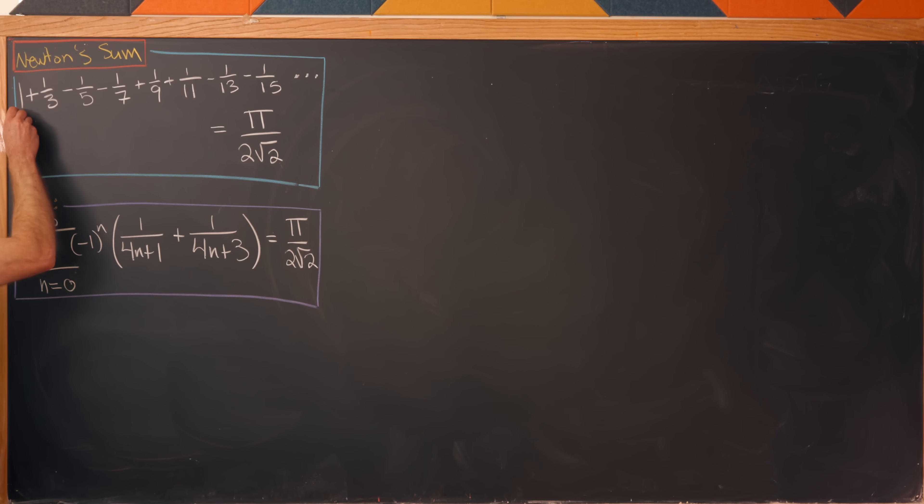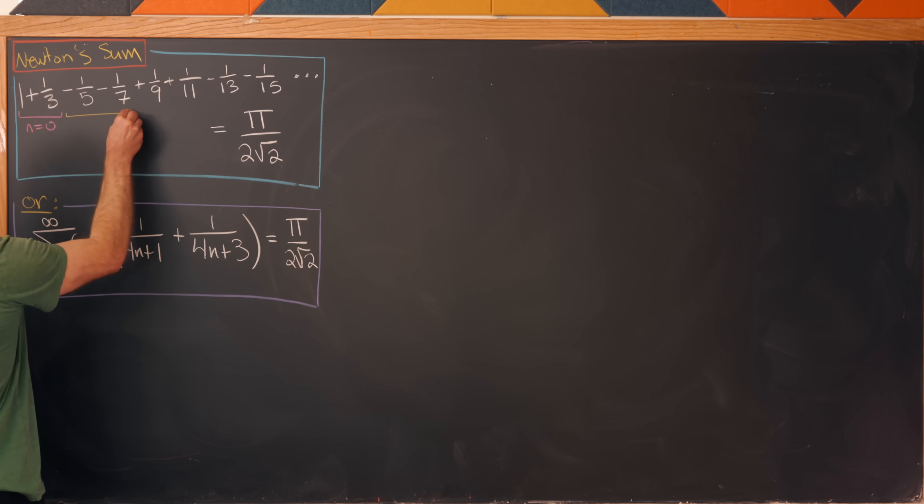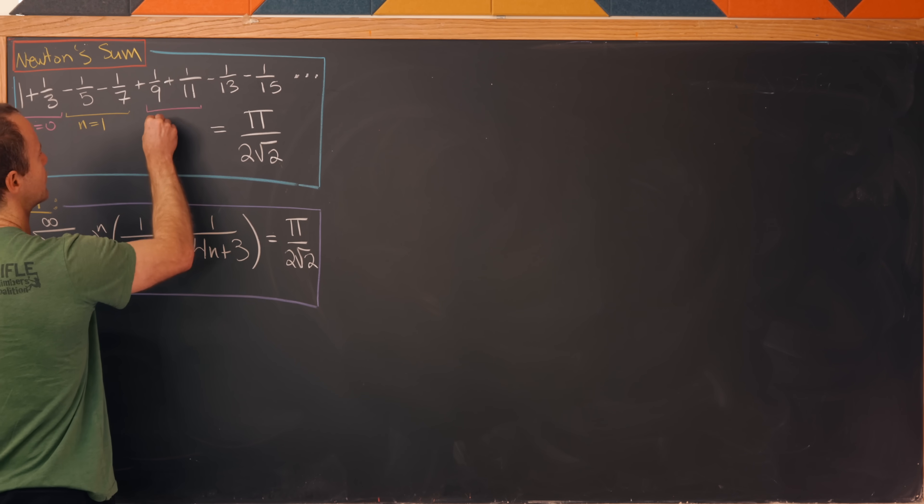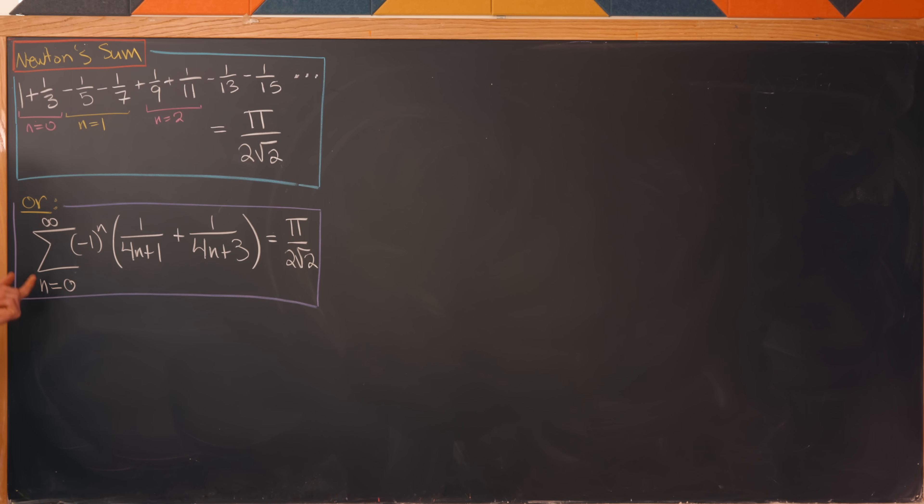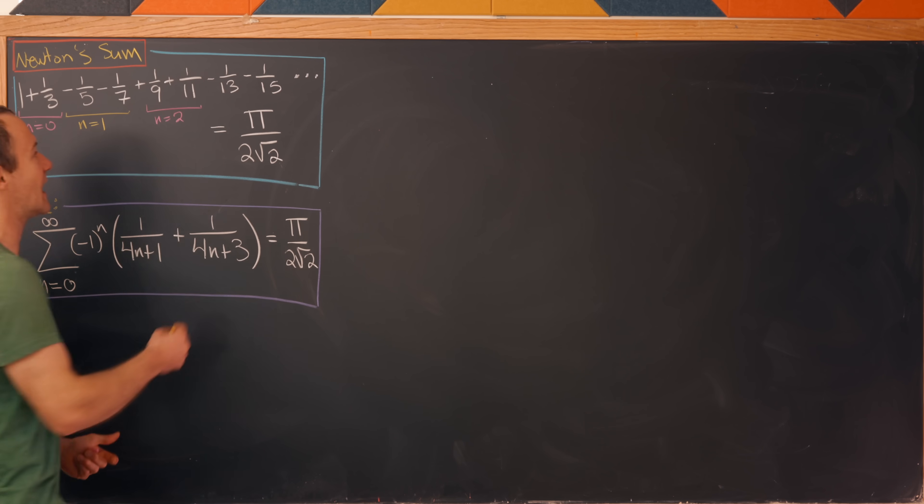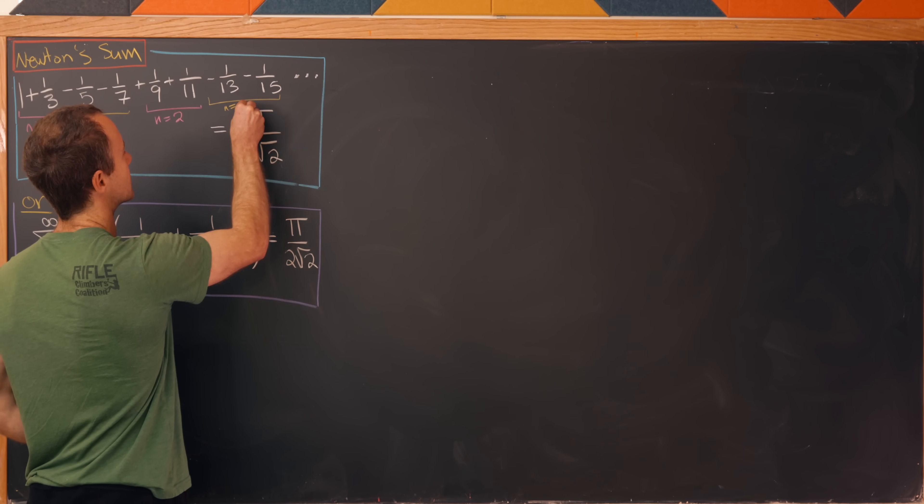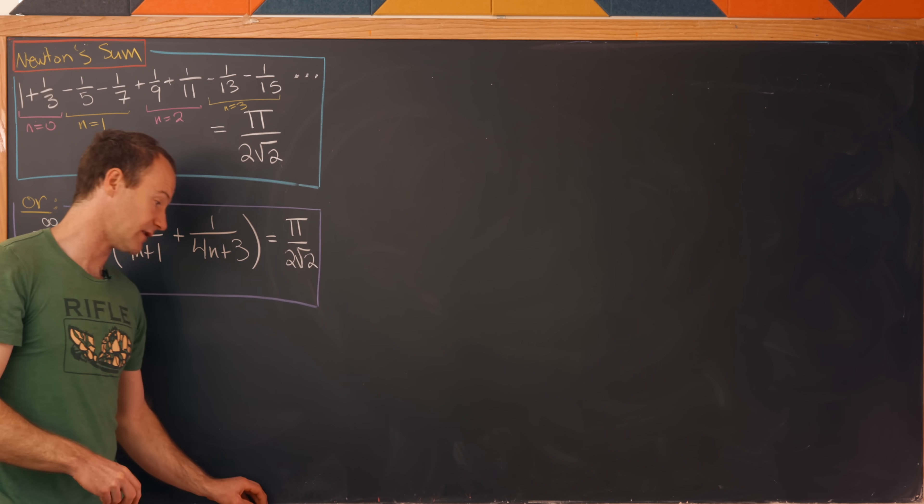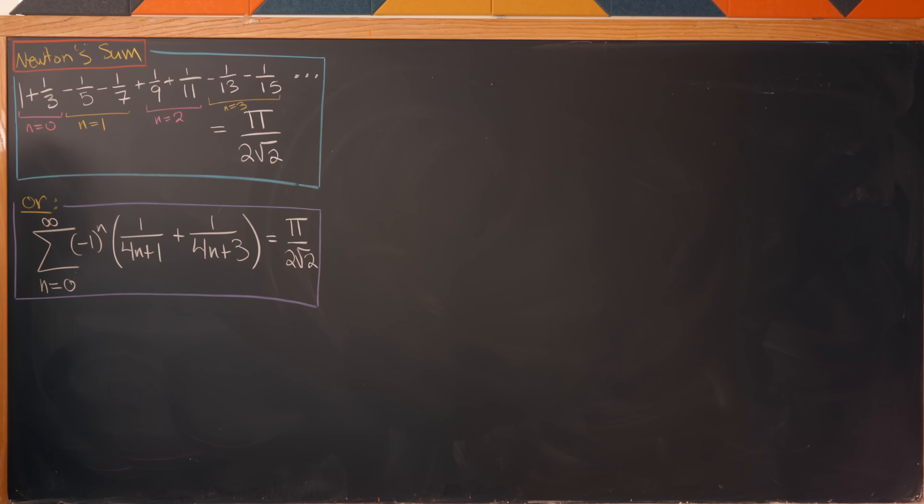Notice the n equals 0 term gives us exactly these first two terms. That's because we have (-1)^0 and then we clearly get those two. Let's just make sure that it keeps making sense. The n equals 1 term will give us these two terms because we have 1/(4+1) and 1/(4+3). Next, the n equals 2 term will give us these two. We have (-1)^2 which is positive 1, and then 1/(8+1) and 1/(8+3). Likewise, this seems to be the n equals 3 term. Okay, so it looks like this is the closed form of this series.